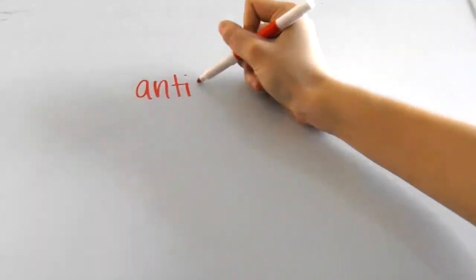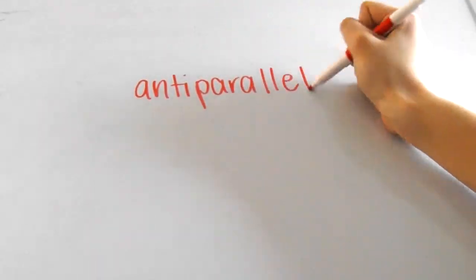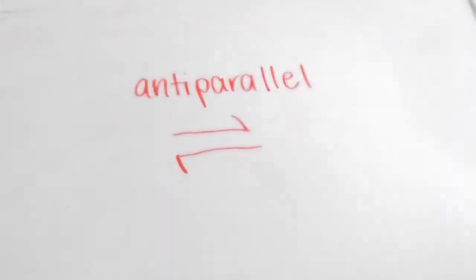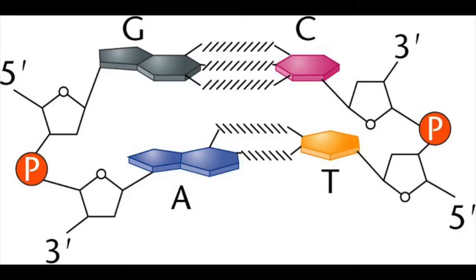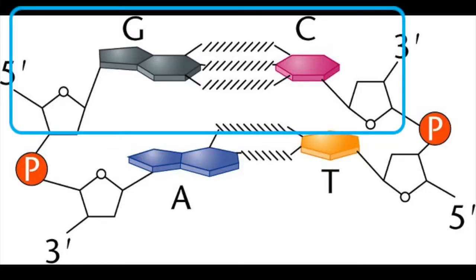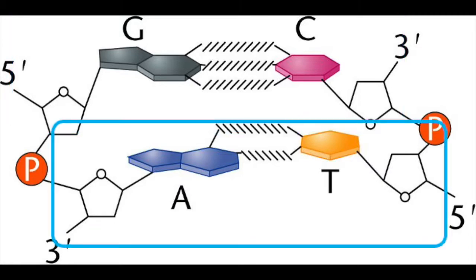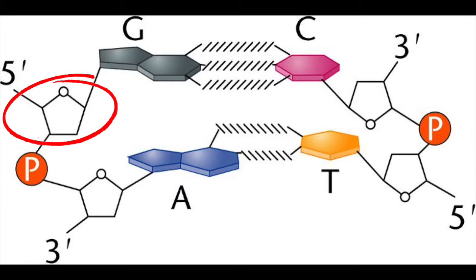There's also another thing that you should know. DNA is an anti-parallel molecule, meaning that its two strands run in opposite directions. Here's a picture of what I mean. Do you see how this strand seems to be an upside-down version of this one? That's because this strand has its fifth carbon oriented up here, and the other strand has its fifth carbon down here for each sugar.